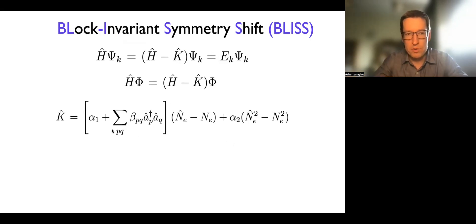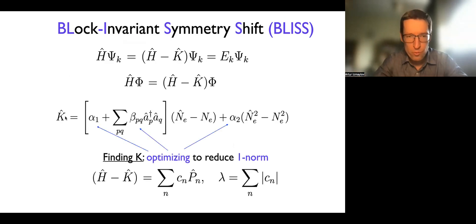Why is the form chosen like that? Simply because we want K to be two electron. There is a possibility to go to higher electron cases, but then it's complicated with the optimization, essentially, because the Hamiltonian itself is two electron. And so the way we find K is essentially we're trying to optimize these three parameters to reduce one-norm for the H minus K decomposition. And the easiest decomposition to consider is a linear combination of Paulis. So you just go to H minus K to the qubit form, and you optimize lambda with respect to the parameters alpha beta, right? And that's how we find K.